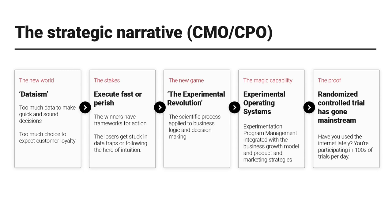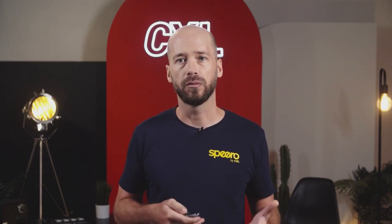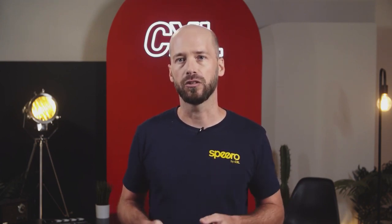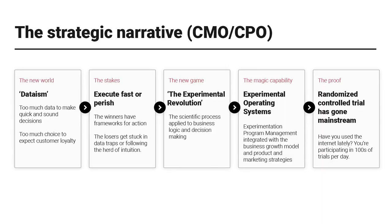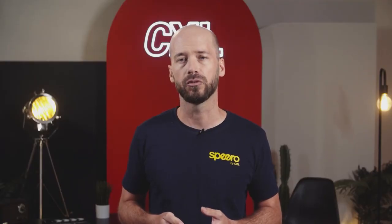The new game is the experimental revolution — coined by MIT professionals, with great Harvard Business Review articles on it. The scientific process applied to business logic and decision-making. The capability is the program — the ability to run experiments efficiently. The whole goal of program management is to lower the cost and increase the accessibility of running experiments. The proof is that the randomized controlled trial has gone mainstream. If you go online daily, you're exposed to hundreds, if not thousands, of randomized controlled trials through your digital experience. As a practitioner, you already know this strategic narrative — this is me preaching to the choir.